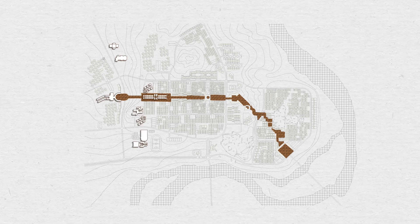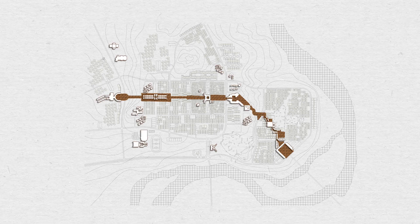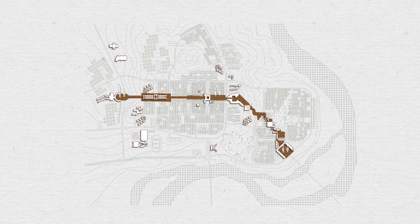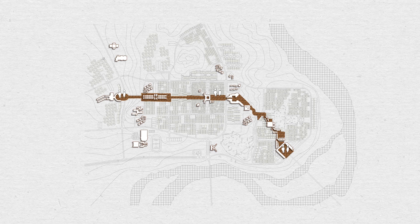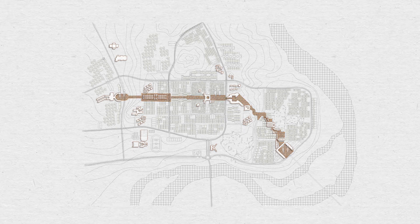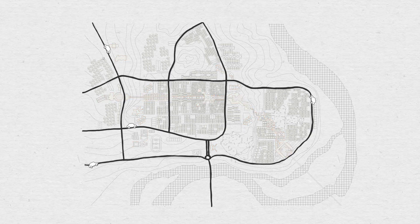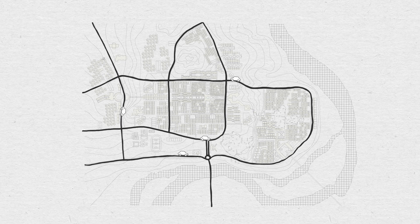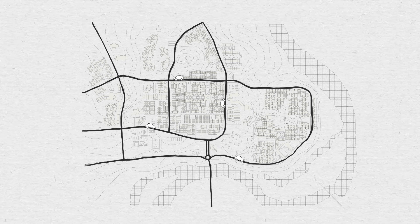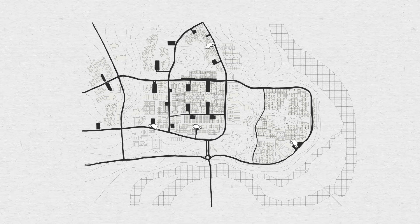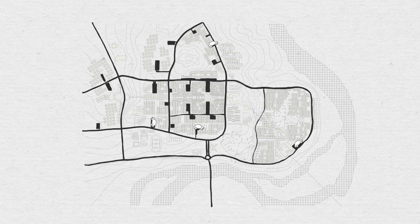Various public buildings and commercial activities are grouped along the east-west pedestrian boulevard to stimulate social interaction. The car is segregated from community life as much as possible; therefore all parking is concentrated in strategic areas.